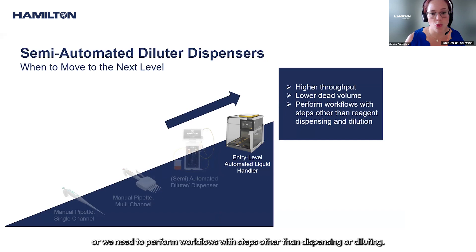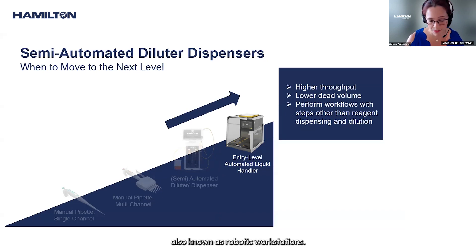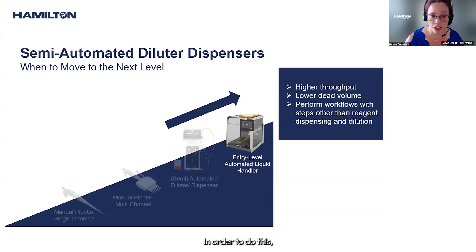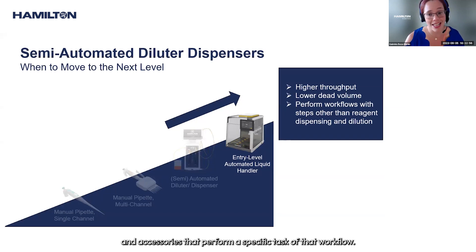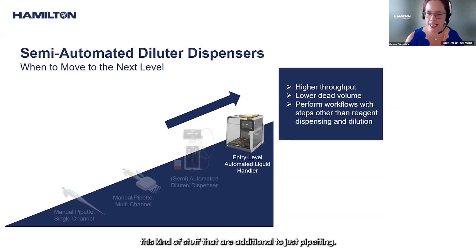Or when we need to perform workflows with steps other than dispensing or diluting. Here we move into automated liquid handlers, also known as robotic workstations. In addition to liquid dispensing, these systems can perform a series of steps — known as workflows — and are equipped with various modules and accessories such as cooling samples or reagents, heating, and shaking.